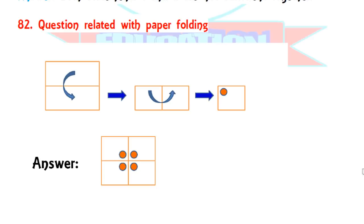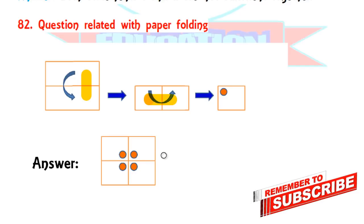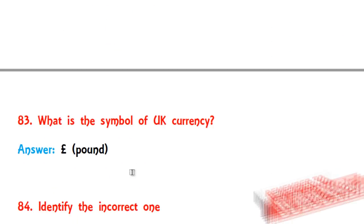The next aptitude question is related to a paper-folding activity. They gave three images: a square shape is folded up to down, then left to right, and finally one hole is made in the center-left top corner. When you open the paper after making that single hole, four holes will appear in the center — that is the correct answer.